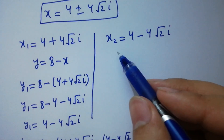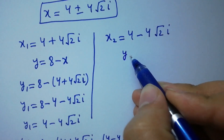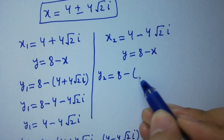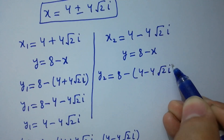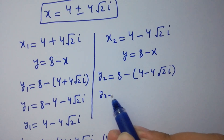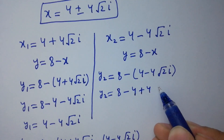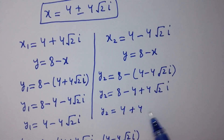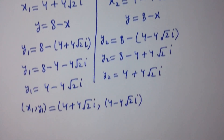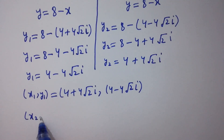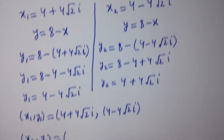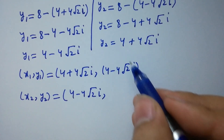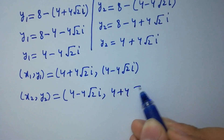Similarly, for x2 equal to 4 minus 4 square root of 2i, using y equals 8 minus x: y2 equals 8 minus (4 minus 4 square root of 2i), which simplifies to y2 equals 8 minus 4 plus 4 square root of 2i, giving y2 equals 4 plus 4 square root of 2i. So the pair (x2, y2) equals (4 minus 4 square root of 2i, 4 plus 4 square root of 2i).